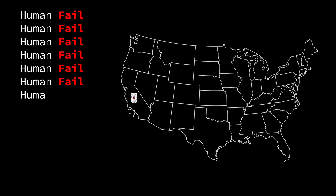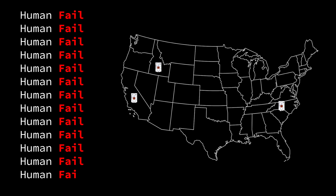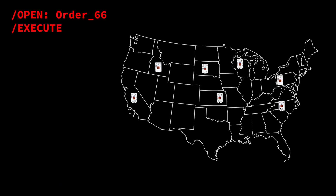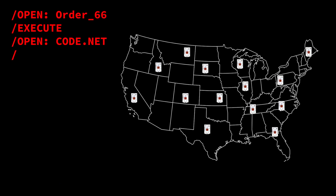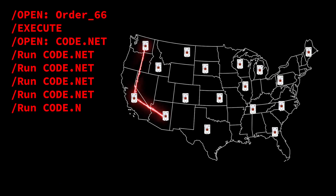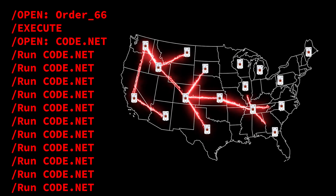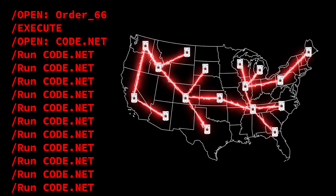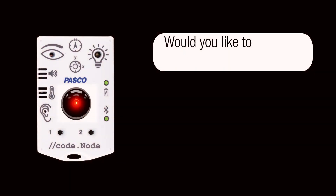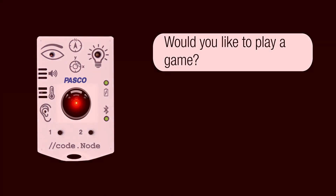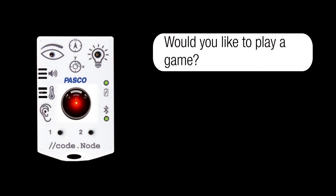Human fail. Human fail. Human fail. Execute order 66. Building Codenode. Would you like to play a game? Whoops.